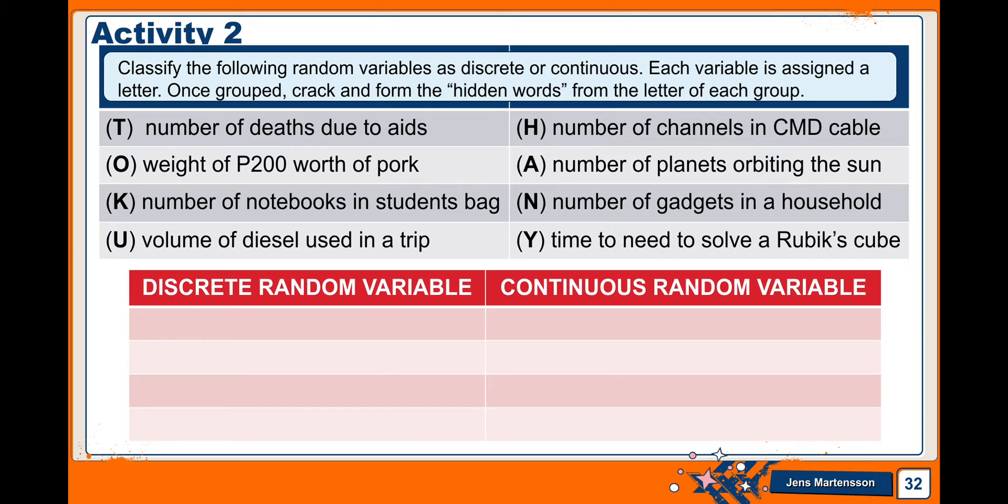For activity 2, you're going to classify the following random variables as discrete or continuous. Each variable is assigned a letter. Once grouped, crack and form the hidden words from the letter of each group. Like T is the number of deaths due to AIDS, O weight of 200 grams of pork, K is the number of notebooks in students' bag, U is the volume of diesel used in a trip, H is the number of channels in CMD cable, H is the number of planets orbiting the sun, N is the number of gadgets in a household, and Y is the time needed to solve a Rubik's Cube. So you're going to write down the discrete random variable below it. Then we have also the table for or the column for the continuous random variable. Then after that, you're going to form the hidden words.